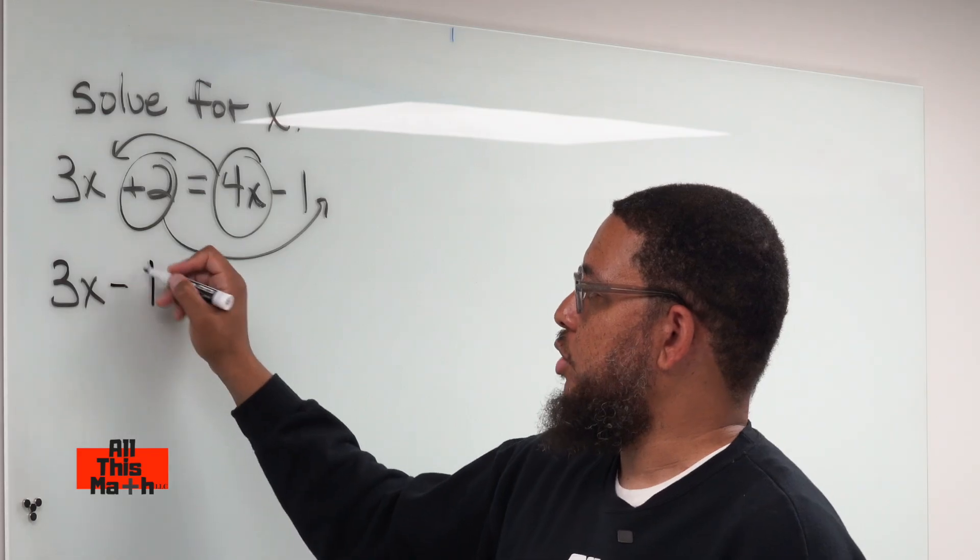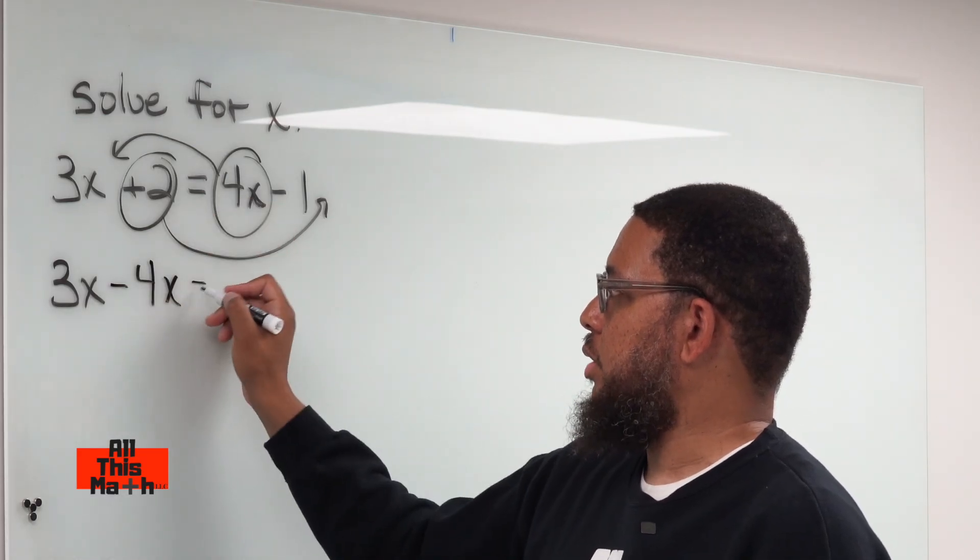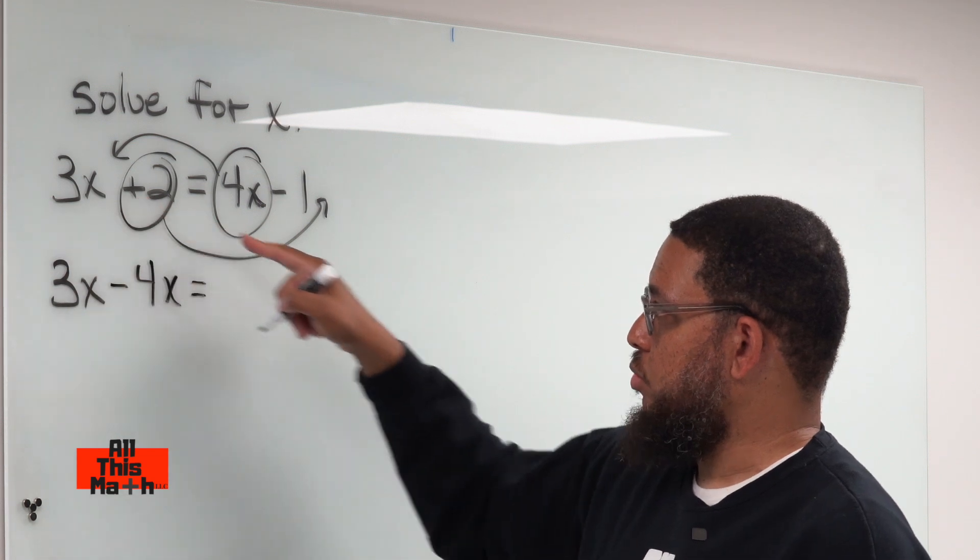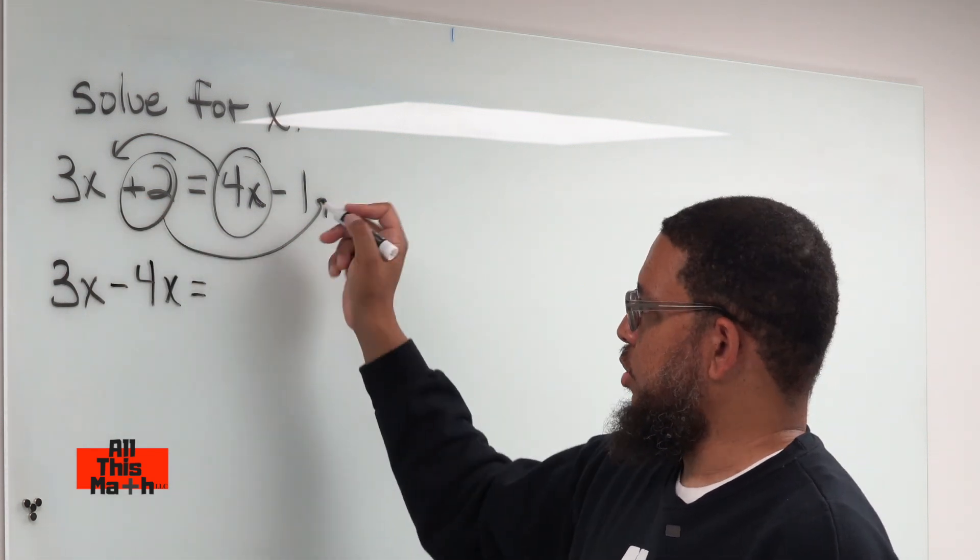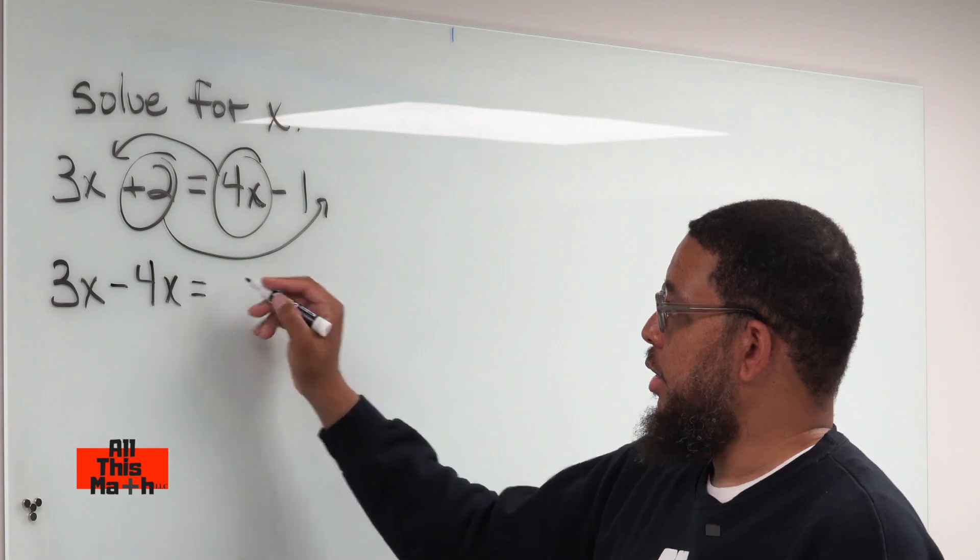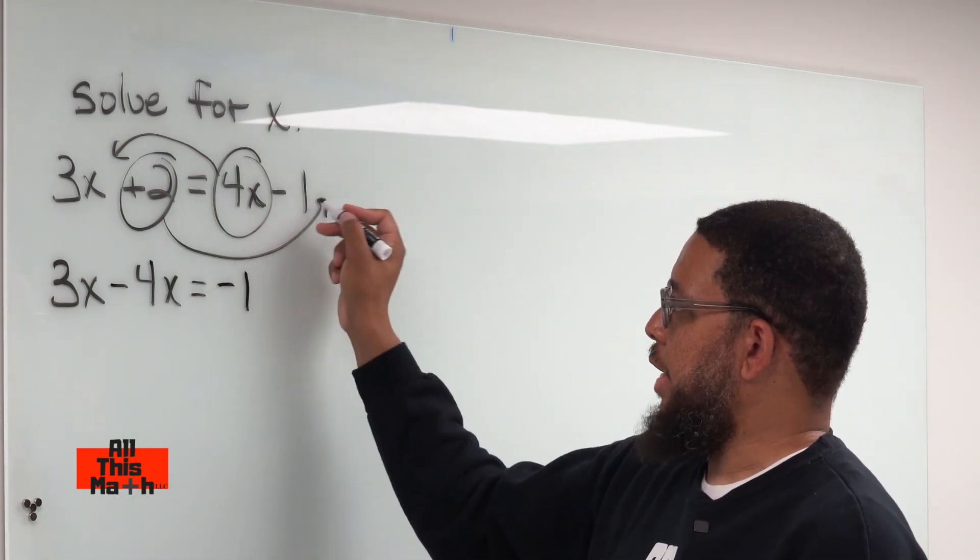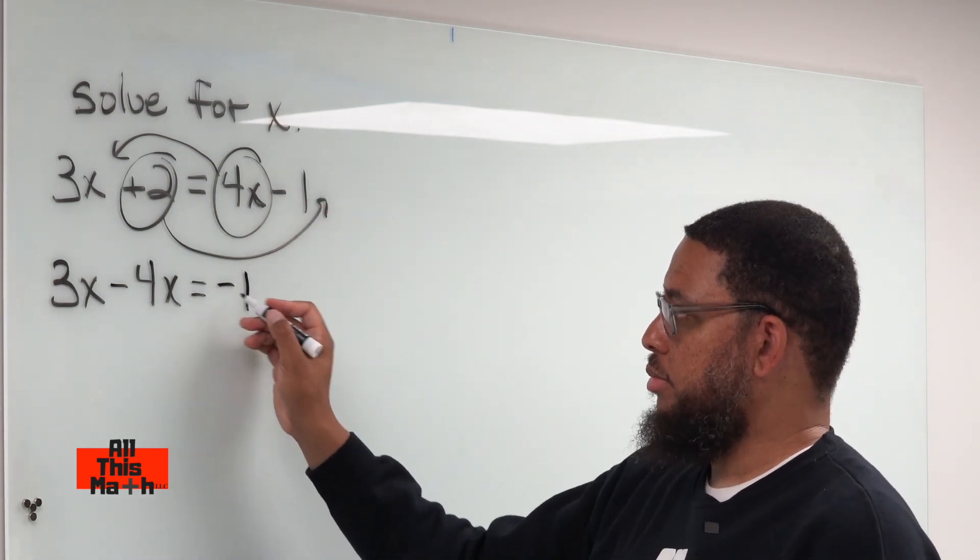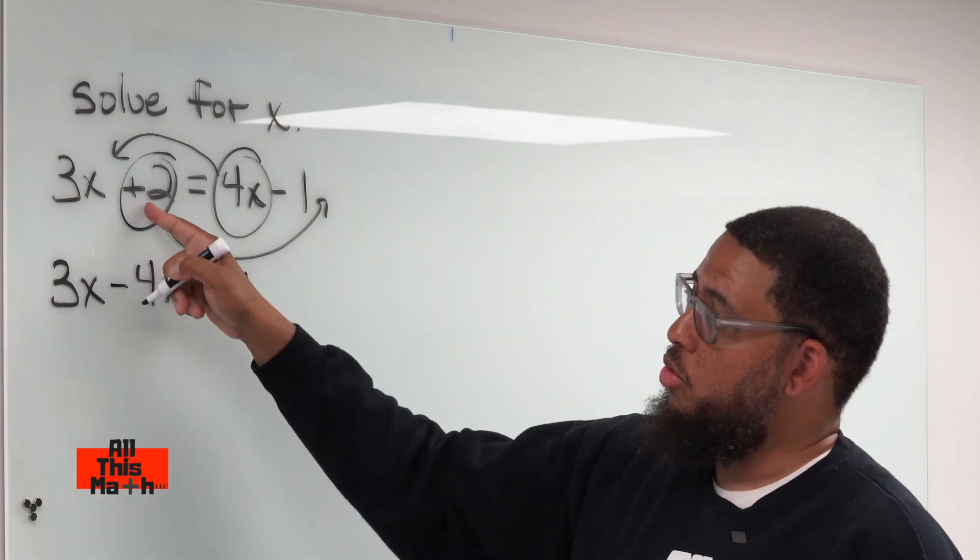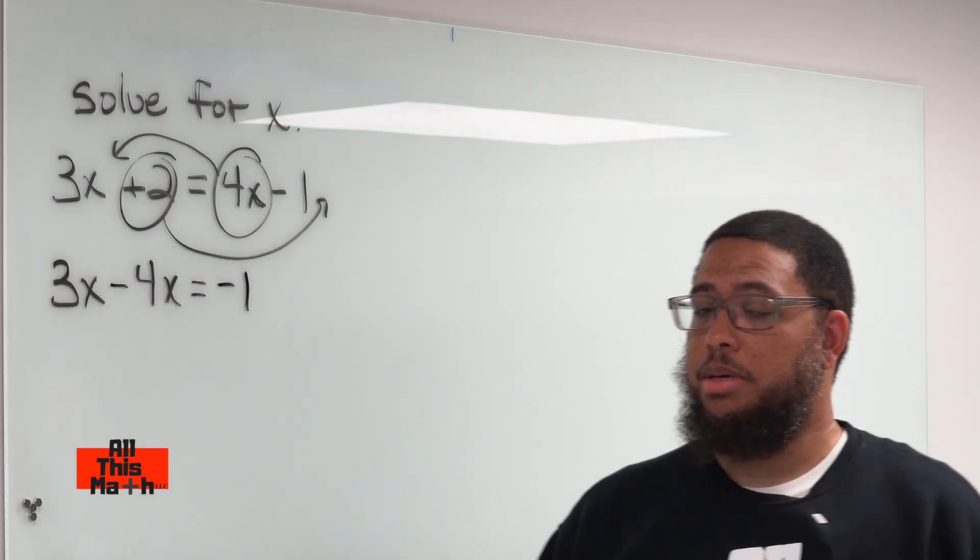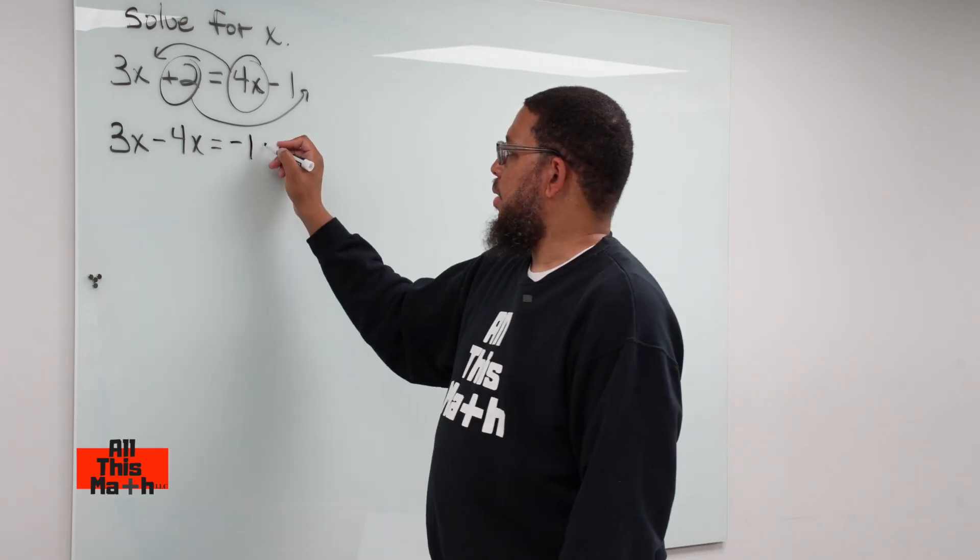Bring the equal sign down, and this 2 gets moved over. Now you can write the negative 1 first, or you can write the negative 1 second, it doesn't matter. I'm going to write the negative 1 first, because it was a minus 1 right here, so it's still a minus 1, which is a negative 1. When I move the positive 2 to the right side, now it becomes negative 2. So now I have minus 2.